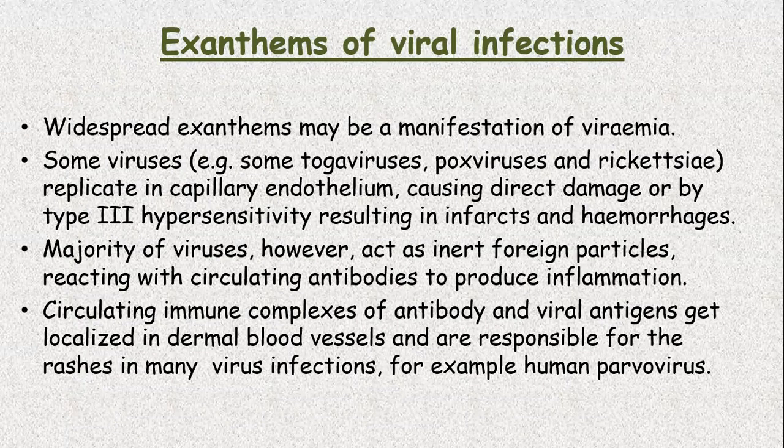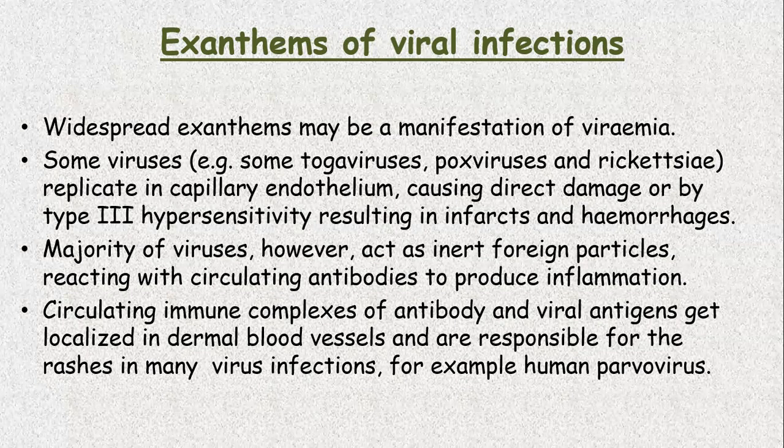Exanthems of viral infections. Widespread exanthem may be a manifestation of viremia. Some viruses, for example the toga virus, pox virus, and rickettsia, replicate in the capillary endothelium, causing direct damage or type 3 hypersensitivity, resulting in infarcts and hemorrhages. While majority of viruses act as inert foreign particles, reacting with circulating antibodies to produce inflammation. The circulating immune complexes of antibody and viral antigen get localized in dermal blood vessels and are responsible for the rashes in many virus infections, for example human parvovirus.